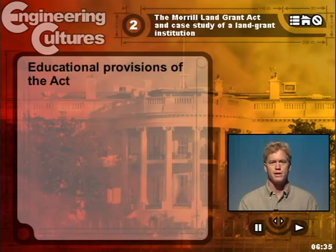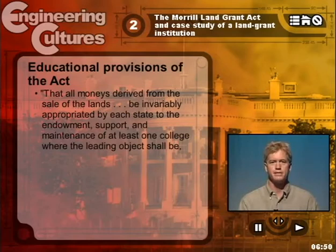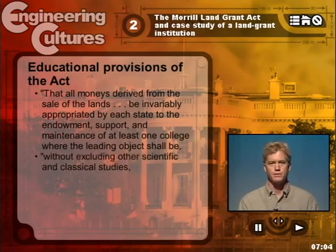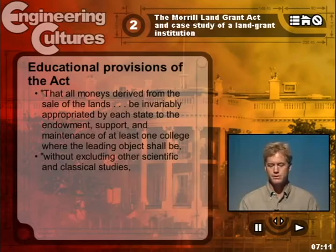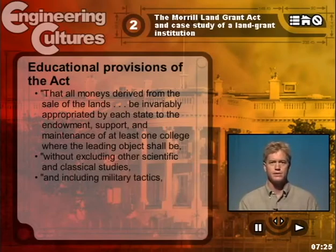Quoting from the act: all monies derived from the sale of the lands be invariably, without exception, appropriated by each state to the endowment, support, and maintenance of at least one college — meaning basically operating costs. One college where the leading object shall be, without excluding other scientific and classical studies — in other words, what we're going to come up with here cannot exclude classical education in the humanities, liberal arts, and some of the sciences. And the act also required including military tactics.